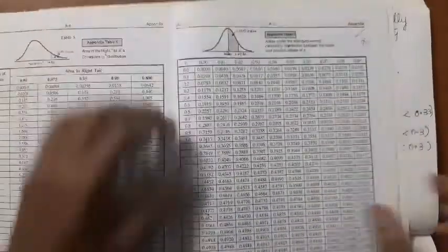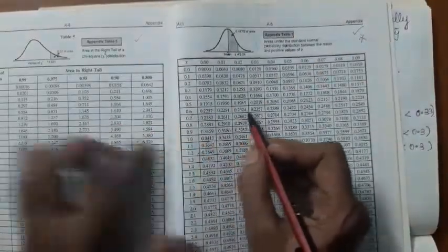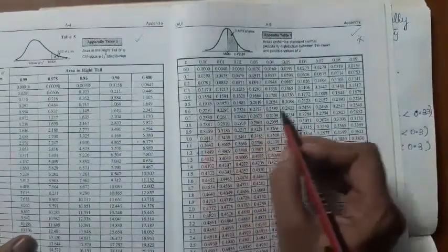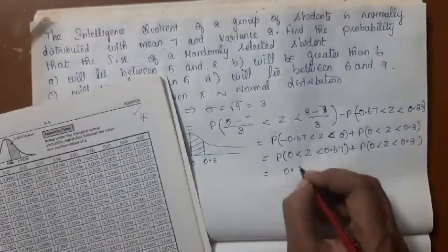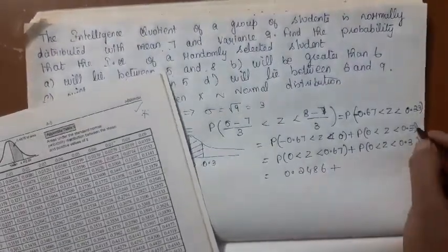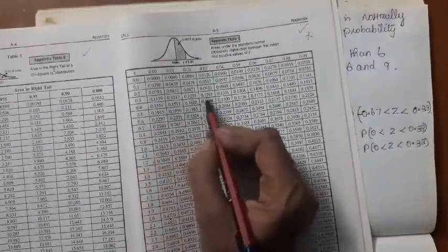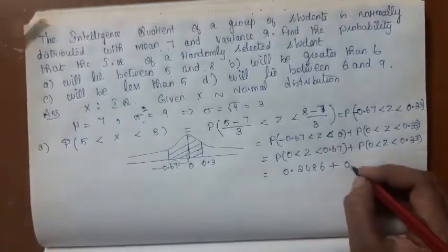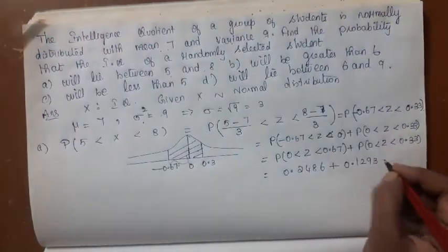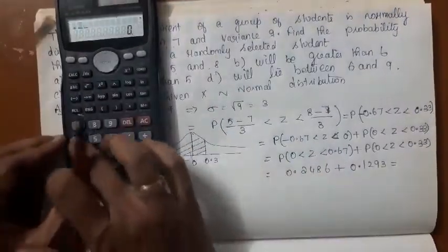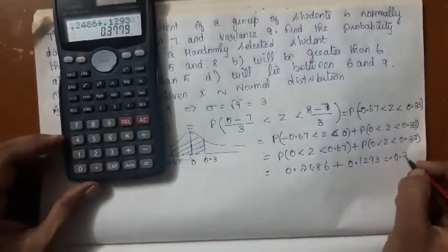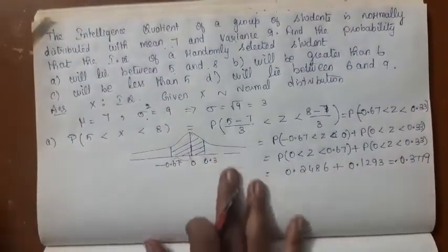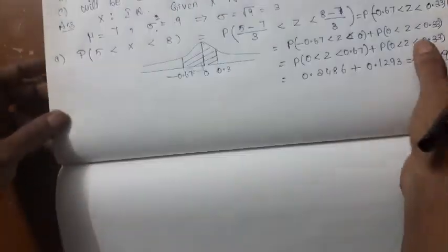The area from minus 0.67 to 0 will be same as the area from 0 to plus 0.67 because the curve is symmetric. 0.67, 0.2486 plus 0.33, 0.1293. So 0.2486 plus 0.1293, your answer is 0.3779.